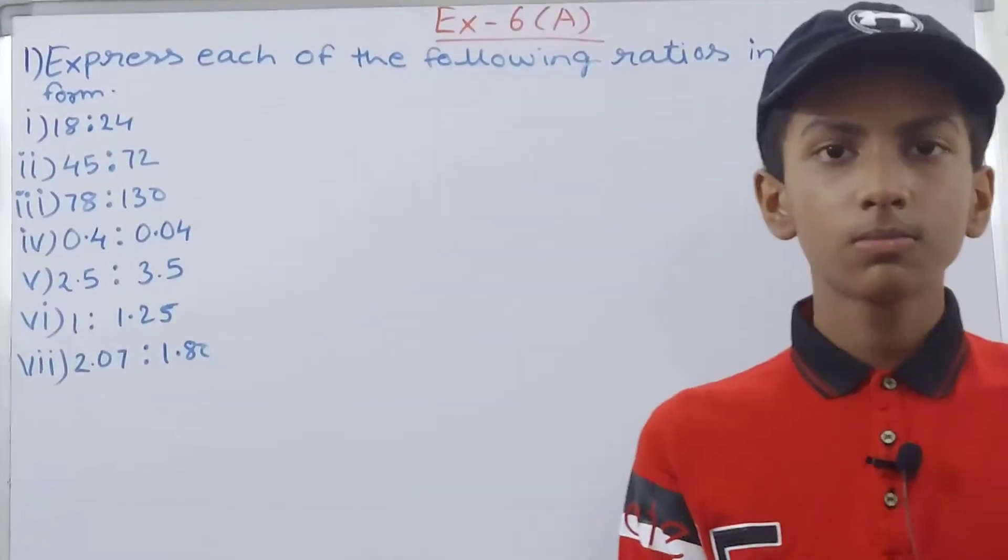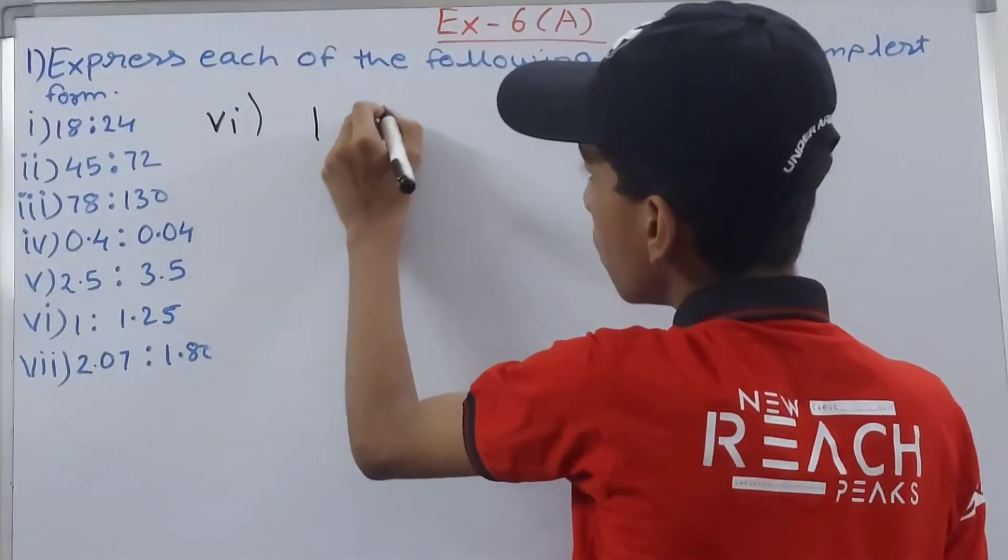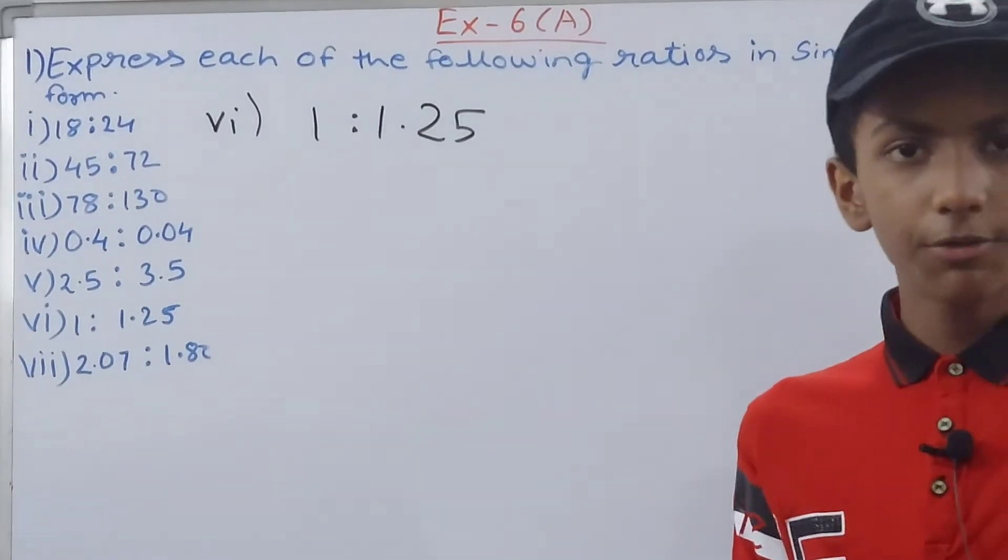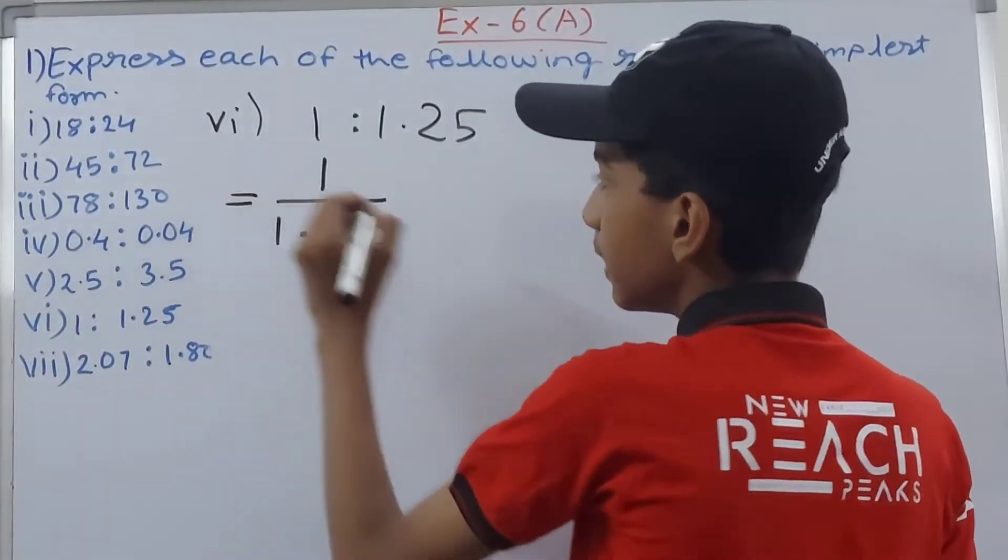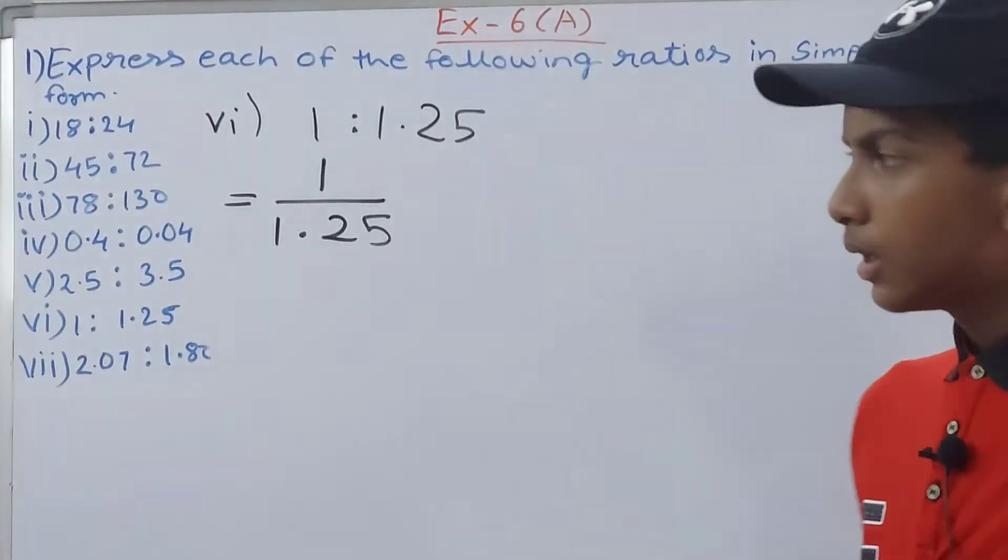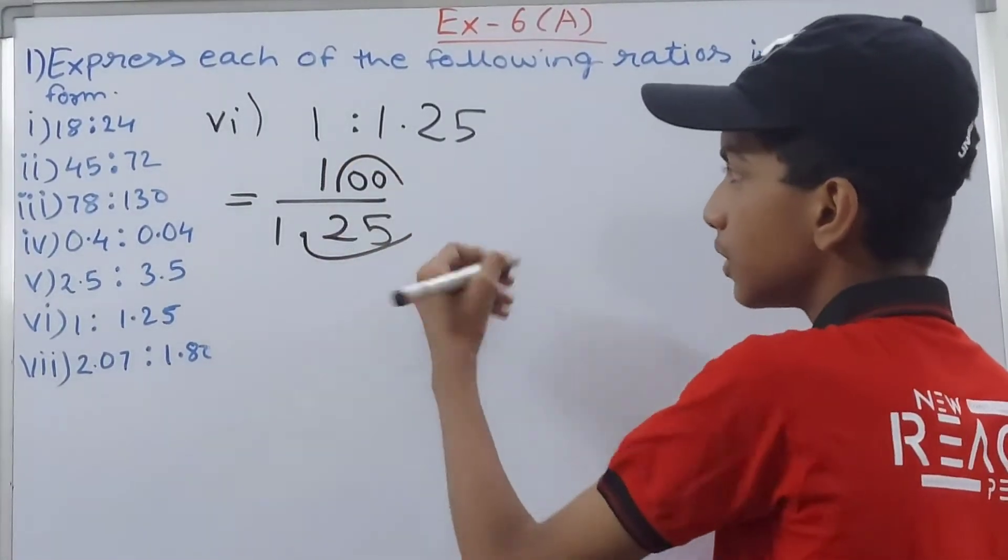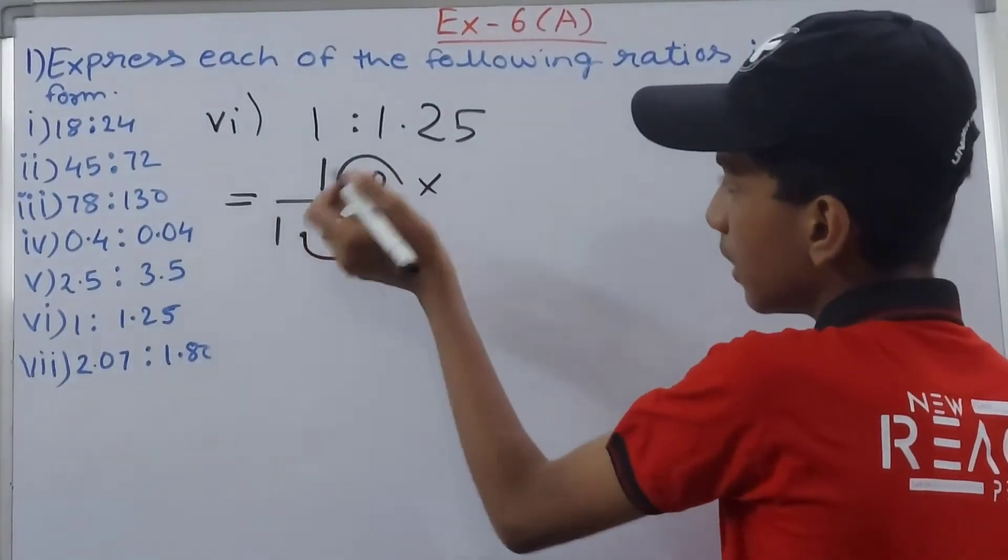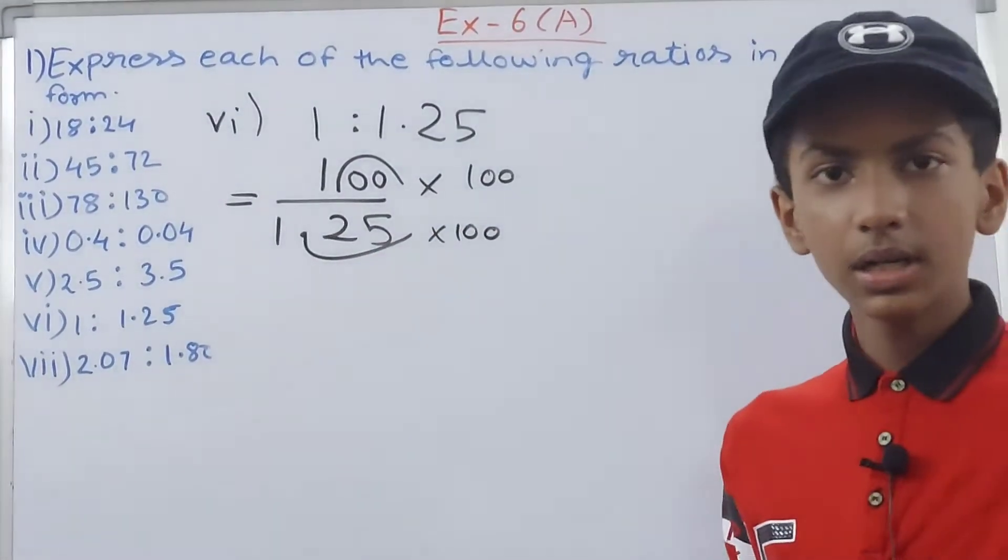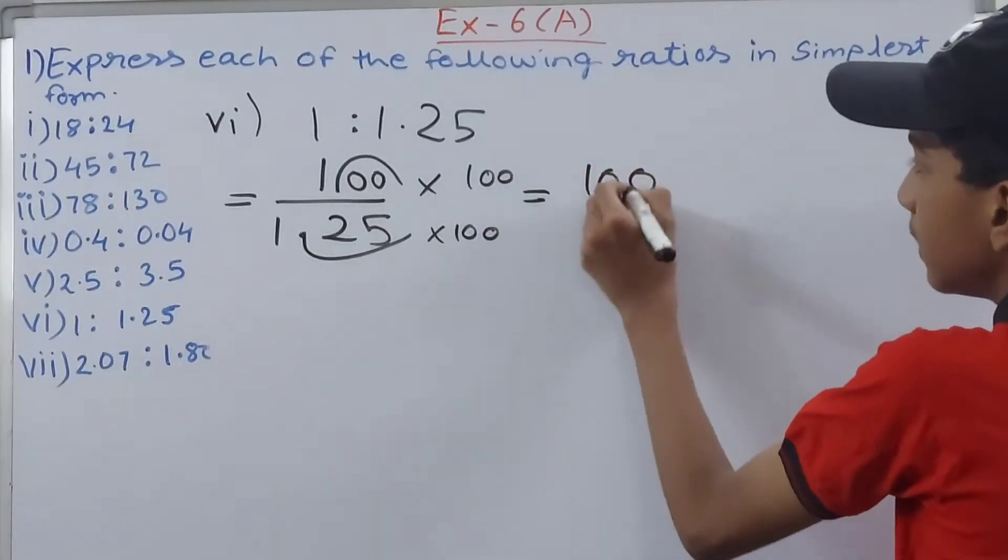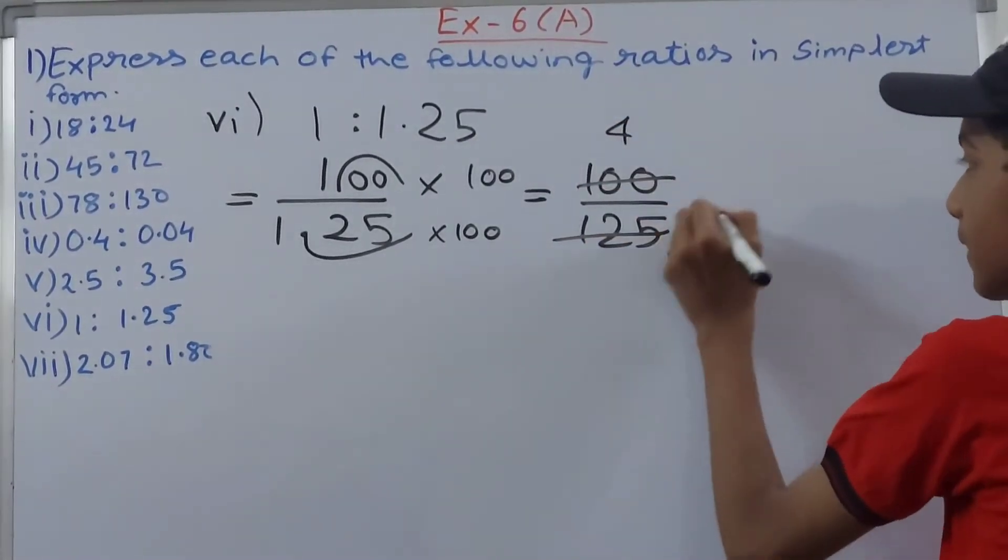Now let's move on to the next part. Then next we have the sixth part: 1 is to 1.25. So again we will convert this into a fraction form. First we will get 1 upon 1.25. We have to get rid of the decimal point once again. Basically what we will get is into 100 here and into 100 here as well, because two decimal places are after the decimal point. So you have 100 is to 125. Cancel this by 25, so this will be 4 and this will be 5. We'll have 4 is to 5.